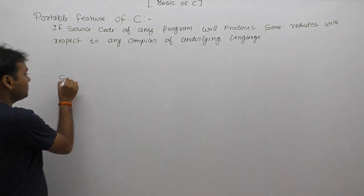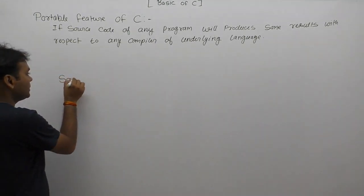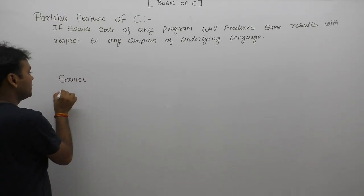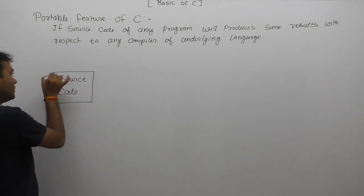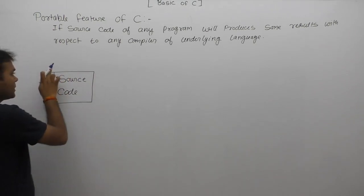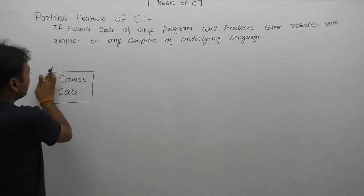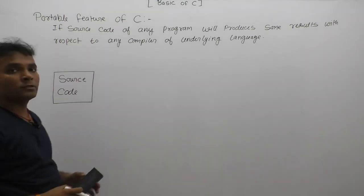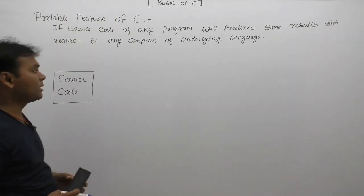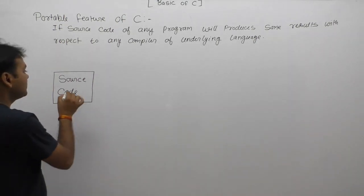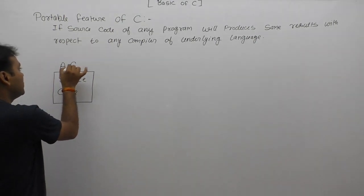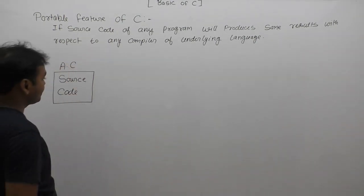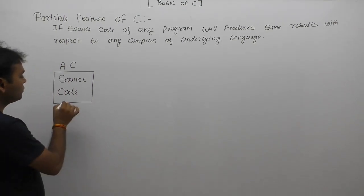Portable features are checked with respect to the source code of any programming language. Source code is nothing but instructions written by the user following the rules or conventions of the underlying programming language. Suppose we are writing some source code in C language inside a file called something like 'a.c'.